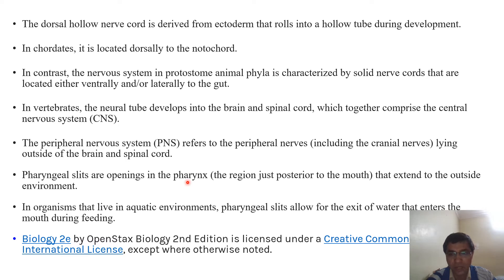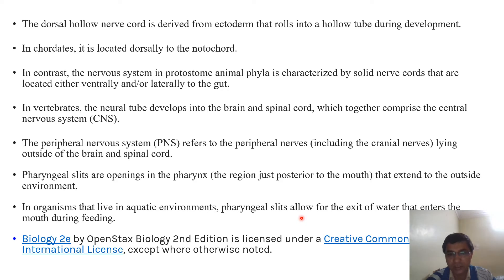The third characteristic feature is pharyngeal gill slits — these are the openings in the pharynx. The pharynx is a junction of five tubes; it is a region posterior to our mouth and extends to outside environments. In organisms that are aquatic in nature, these pharyngeal gill slits allow the entry as well as the exit of water from the mouth during the feeding process.